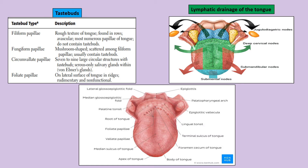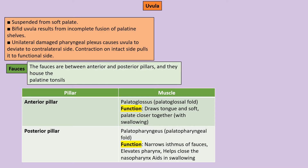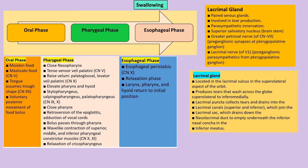Circumvallate papillae are associated with Von Ebner's gland, a minor salivary gland with serous secretion similar to the parotid. The uvula is suspended from the soft palate; incomplete fusion of palatine shelves gives rise to a bifid uvula. Unilateral damage to the pharyngeal plexus shifts the uvula to the contralateral side. The fauces are soft folds of muscle between the anterior and posterior pillars, with the palatine tonsils in between. The anterior pillar is palatoglossus, and the posterior pillar is palatopharyngeus.